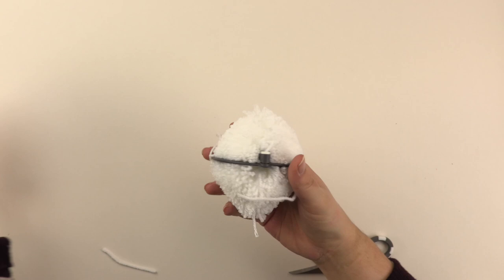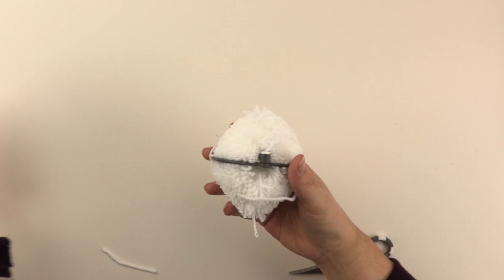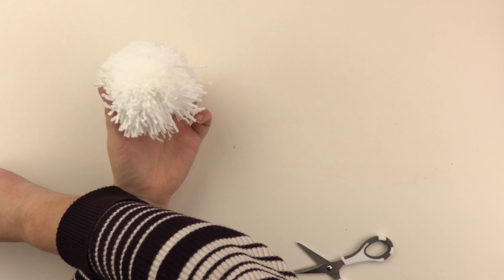Then just take the pom-pom maker off. So it's not very round, I'm just going to take my scissors and then just trim until I get the shape that I want.